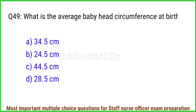Q49. What is the average baby head circumference at birth? The right answer is option A: 34.5 cm.